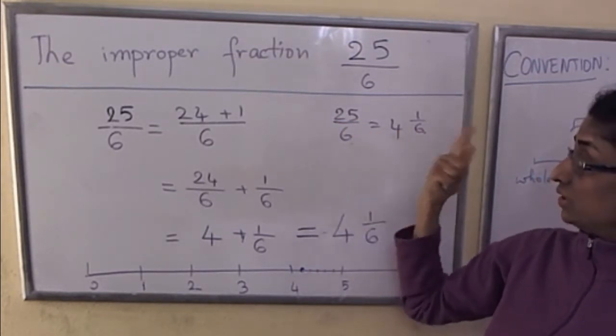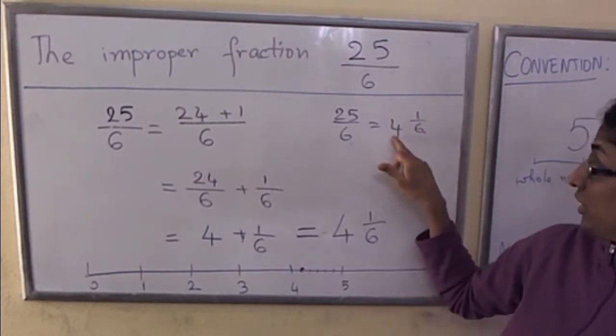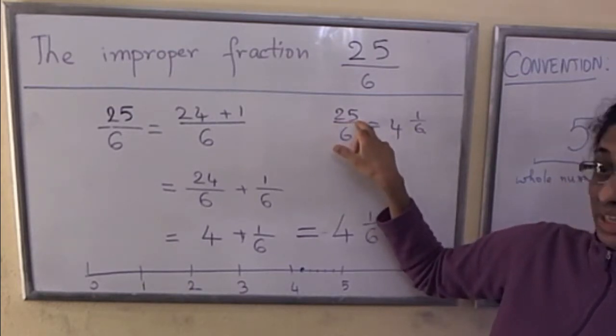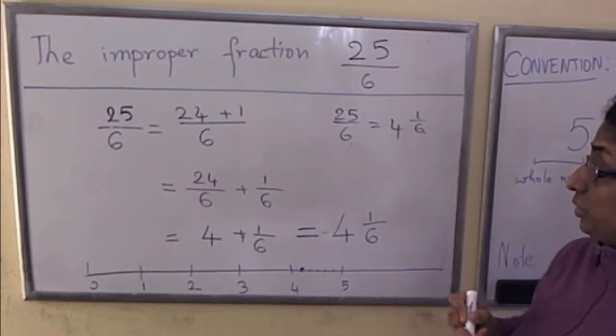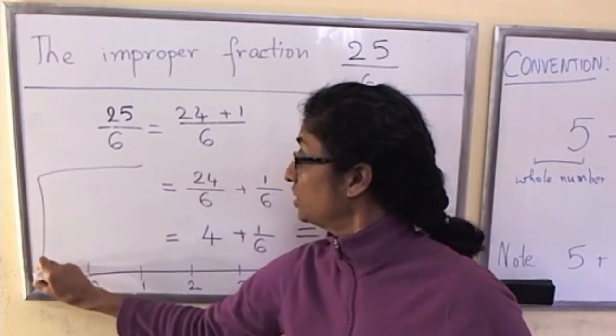So 6, 12, 18, 24, that's where. So that 4 is this 4. We went up to 24, and then one more would get us to 25, so that is this 1.